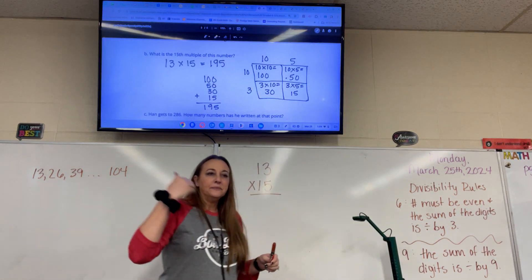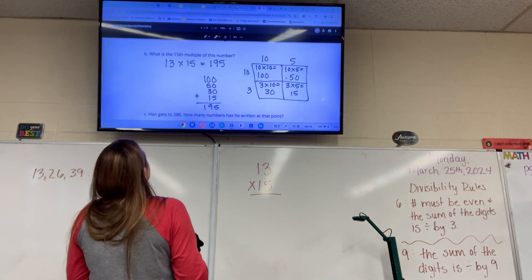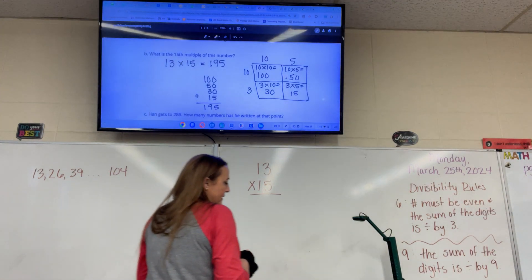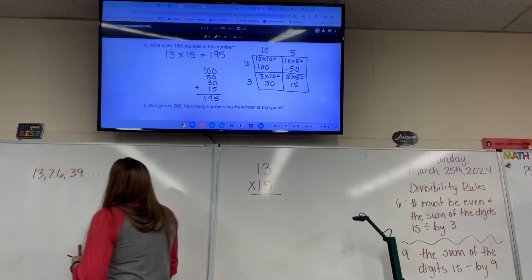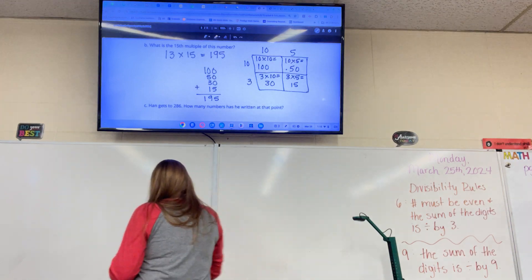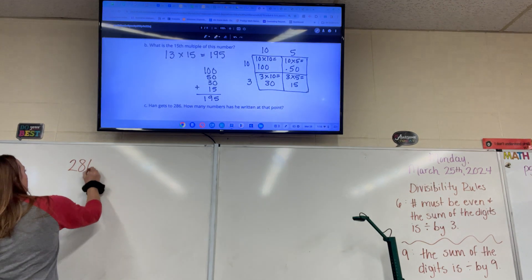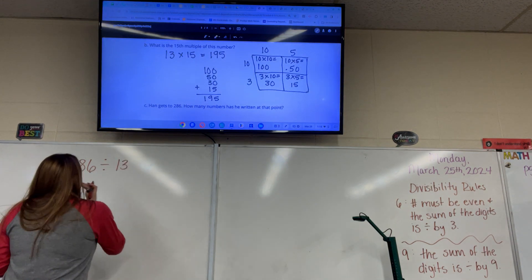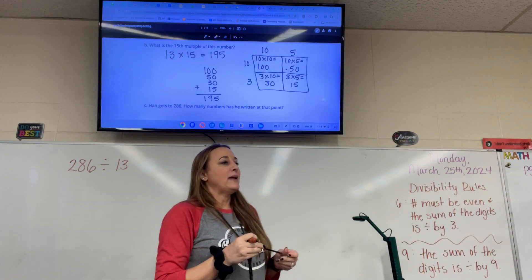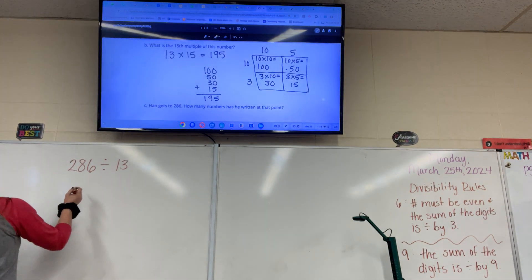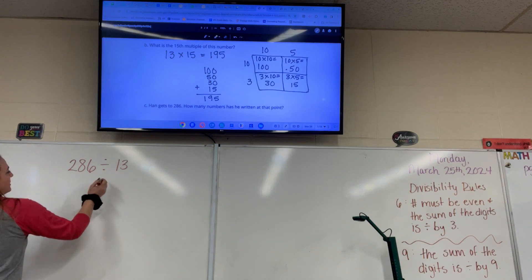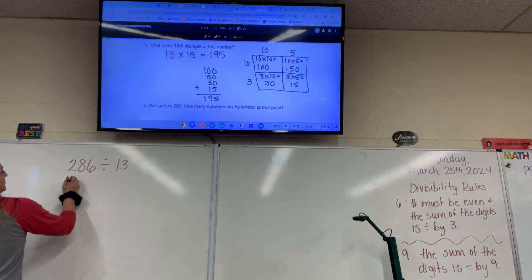Han keeps going until he gets up to 286. How many numbers has he written at that point? Okay. So we know he's doing multiples of 13. So this is basically what we're doing: 286 divided by 13. Now we have not yet learned long division, so we have to use what we know to try and figure this out. So I know that 13 times 2 is 26. Right? So let me take away 26 from there. And that's going to leave me with 260.